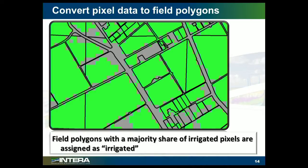When you get down in and start looking at how these field polygons — these are field outlines — relate to the actual Landsat pixels, which are kind of chunky and blocky, about a quarter acre.